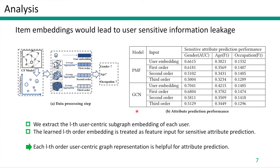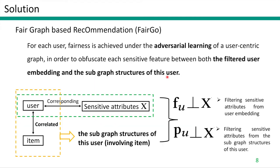To validate this assumption, we show an example. It can be observed from this table that the attributes of a user are not only exposed through her embedding, but also through the surrounding neighbors' embeddings. To this end, we propose FairGoal: a fair graph-based recommendation framework. Specifically, we filter sensitive attributes from user embedding fu. To consider the correlation of users and items, we ensure representation fairness of each user from a graph-based perspective, and filter sensitive attributes from the sub-graph structure of this user.